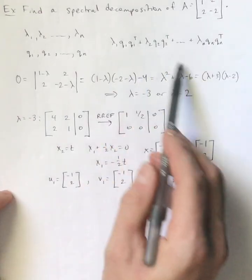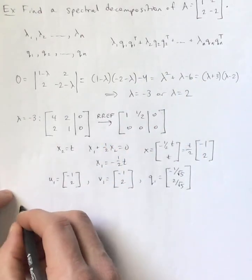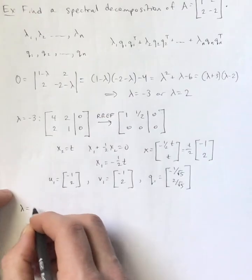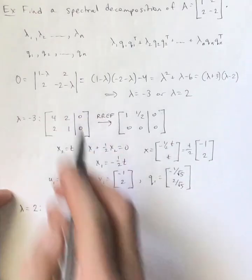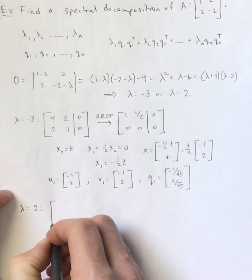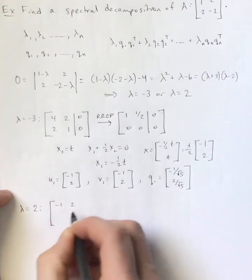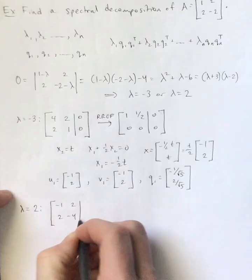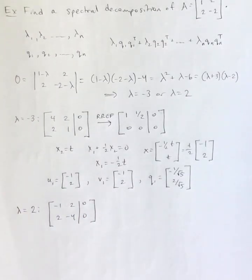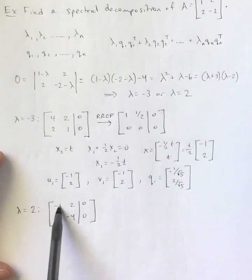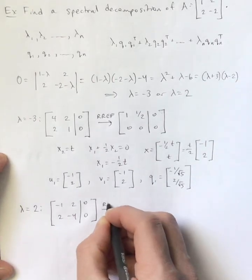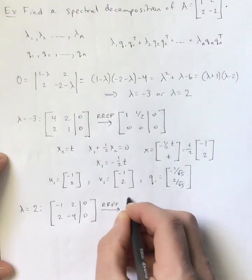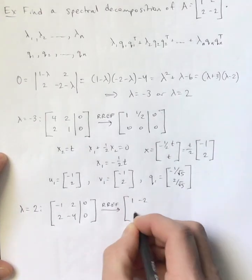All right. So that's one of the Q's in the spectral decomposition. Let's find the other one. And so for lambda equals 2, if I plug that in here, I'm going to get negative 1, 2, 2, negative 4. And you'll notice that the bottom row is twice, actually negative 2 times the top row. So this one will zero out.